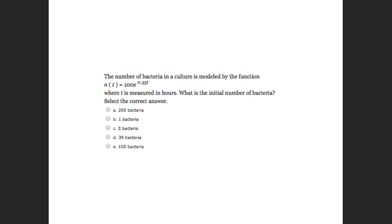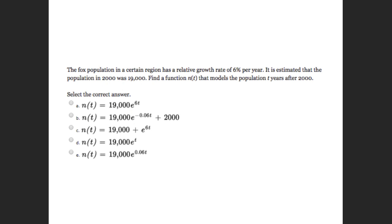The number of bacteria in a culture is modeled by the function N of T is equal to 100 E to the 0.35 T, where T is measured in hours. What is the initial number of bacteria? Oh no. We go from hard to super easy. So my answer is letter E, 100. The initial value or the initial is 100. Excellent. The fox population in a certain region has a relative growth rate of 0.6% per year. It is estimated that population in 2000 was 19,000. Find the function that models the population T years after 2000. I agree that letter E is the correct answer. So being able to set up an equation obviously is an important concept this week.